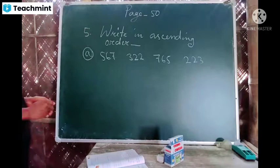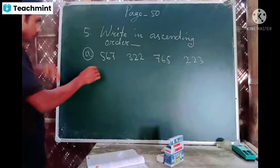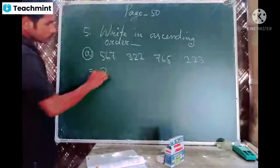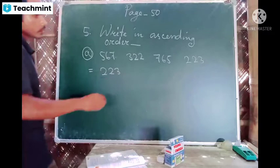High number, right, in ascending order. Ascending order means the number which is very small. 223 - 223 is very small, so we have to write first 223.